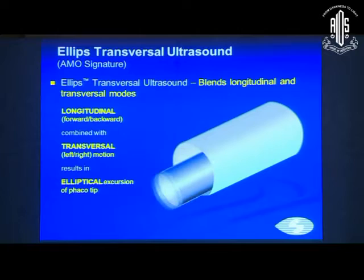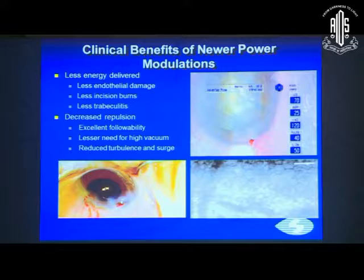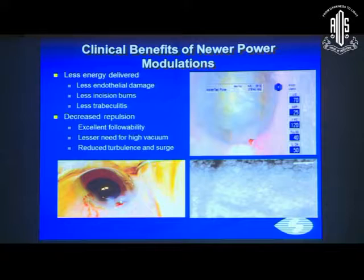This transversal ultrasound is present in the AMO Signature. The benefits include less energy delivered, less endothelial damage, less incision burns, and less iritis. There is also less repulsion of the nuclear fragment, which improves followability, reduces the need for higher vacuum normally required with longitudinal phaco, and reduces turbulence and surge.